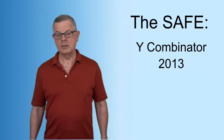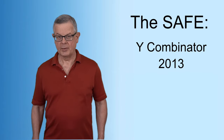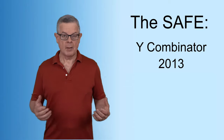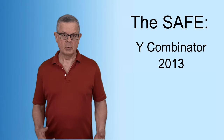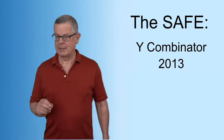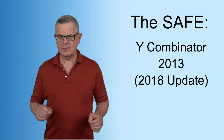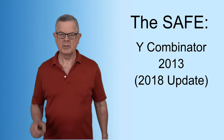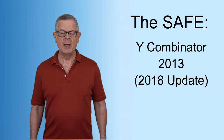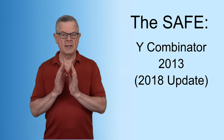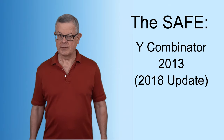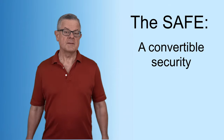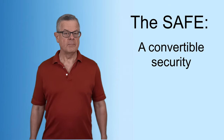The SAFE was created in 2013 by Y Combinator to provide a simpler, more entrepreneur-friendly way of raising money in an early stage startup. They did update it in 2018 because of some problems that did crop up. We'll talk about that update in the next video, but for this video our focus is on the original version of the SAFE and how exactly it works. The SAFE is an example of a convertible security.